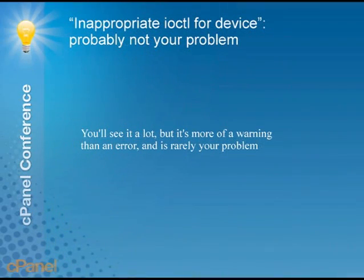Another tip: you'll see 'inappropriate ioctl for device' — it's IO control for a device. Early in my strace career, I would often see that and freak out — that sounds like a real problem! But experience has taught me it usually just isn't. It really just means a programmer is trying to write network file data to a network socket or something like that; it may even just be a test. strace gets all the system calls and sees the error, so it tells you about it, but in my experience it's pretty rarely your actual problem.